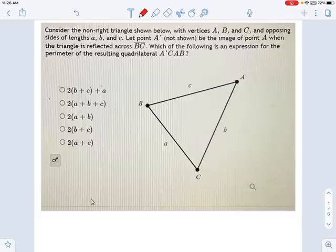I'm being told there's a triangle ABC here, but what I'm not shown is this point A prime. A prime is the image of point A when the triangle is reflected across BC. So that's a bit of a mouthful, but let's think about what this is.